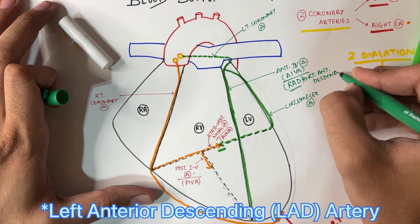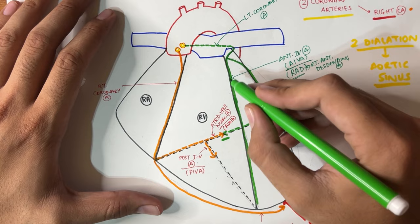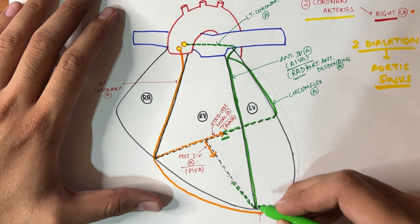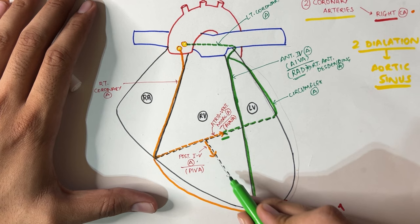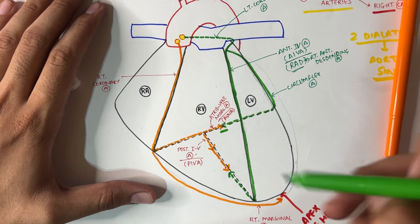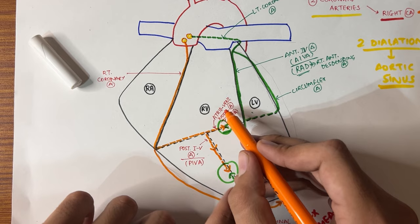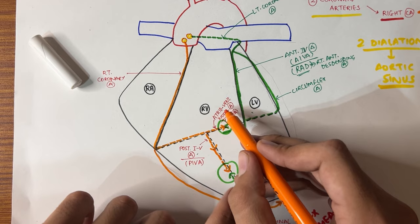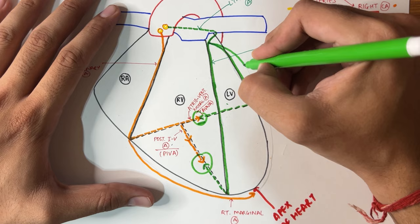The anterior interventricular artery runs down and goes back around to the posterior side, where it meets and anastomoses with the posterior interventricular artery. The other branch of the left coronary artery goes backward and is called the circumflex artery. The circumflex artery runs in the posterior atrioventricular groove and anastomoses with the atrioventricular nodal artery. So there are two important anastomoses: one between the anterior and posterior interventricular arteries, and one between the circumflex artery and the atrioventricular nodal artery.